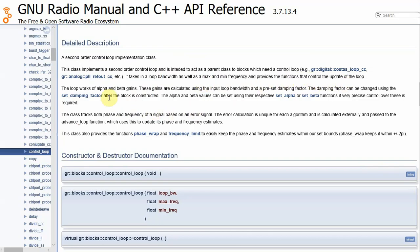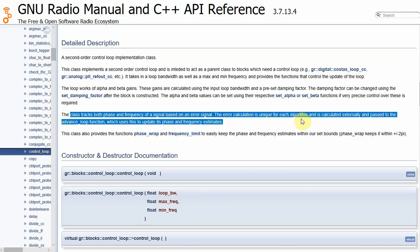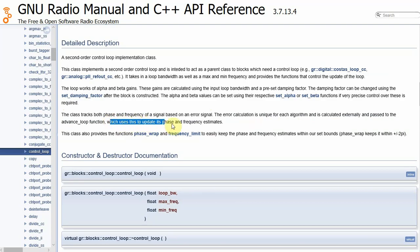So it takes in a loop bandwidth as well as a max and min frequency and provides the functions that control the update of the loop. The loop works with alpha and beta gains. These are the same gains we just discussed in the lecture. These gains are calculated using the input loop bandwidth and preset damping factor, which obviously can be changed. This is important: the class tracks both phase and frequency of a signal based on an error signal. The error calculation is unique for each algorithm and is calculated externally and passed to the advanced loop function, which uses this to update its phase and frequency estimates. This class also provides the functions phase wrap and frequency limit to easily keep the phase and frequency estimates within our set bounds.